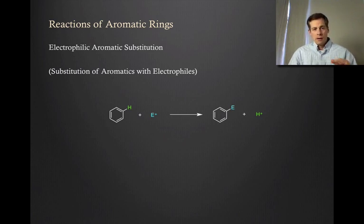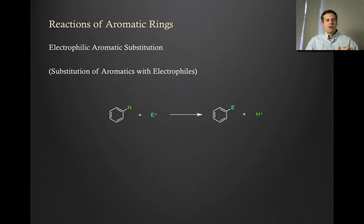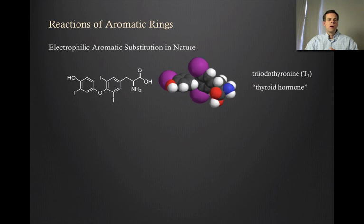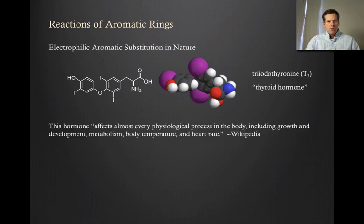Now, before we go into the details of this type of reaction, I thought I would just give you one example where electrophilic aromatic substitution occurs in nature. It actually turns out to be in a very important context, which is in the production of the thyroid hormone, which is this specific molecule here. It's otherwise known as triiodothyronine, or T3 for short. And this is just a space filling model. So you can see it's got these gigantic iodide substituents floating around there.